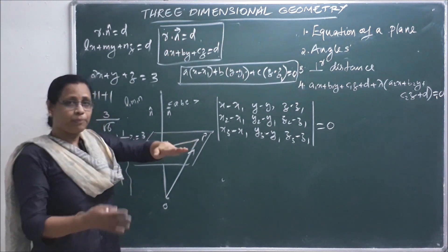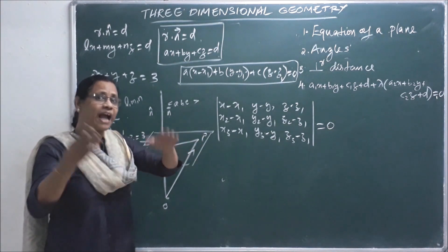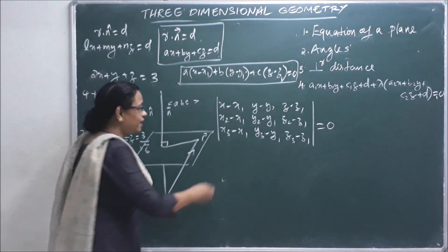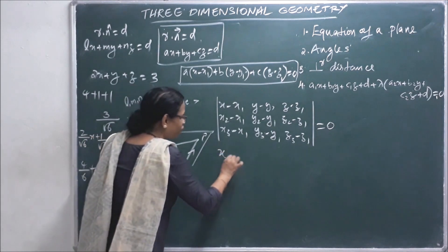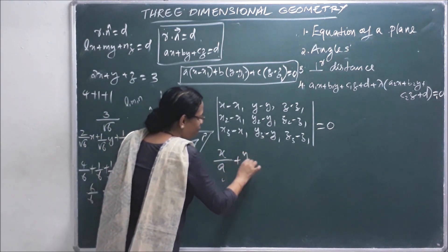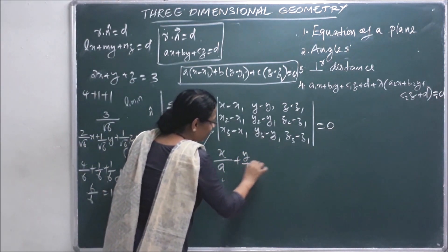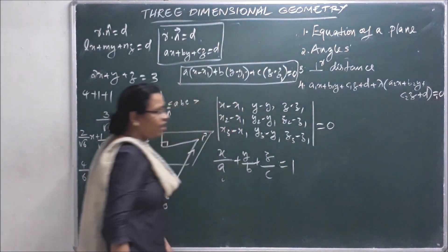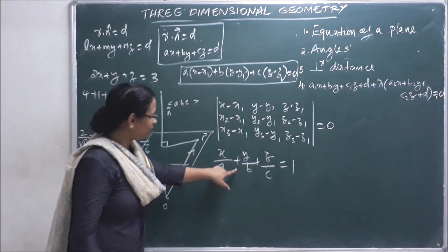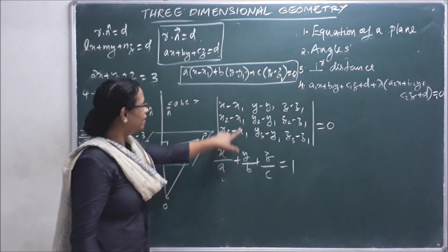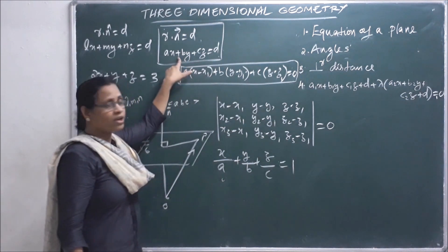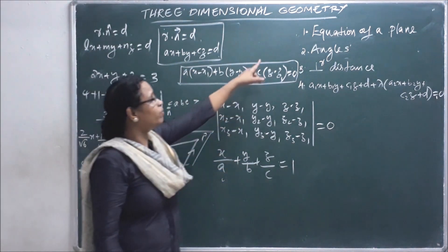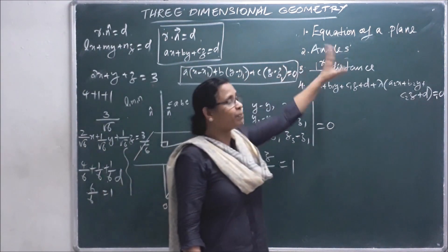We can also intercept the plane on the x, y, z axes. The intercept form is x/a plus y/b plus z/c equal to 1. So altogether we can learn these four forms of the plane equation: normal form, point-normal form, three-point form, and intercept form.